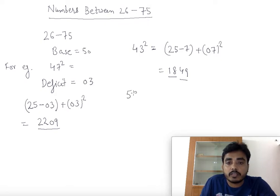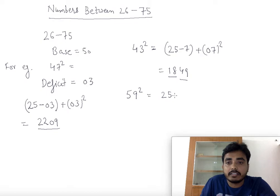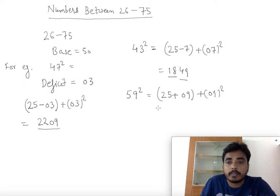Now let's take an example of a number greater than 50. We need to find the square of 59. The number is 9 greater than 50. In this case we add 9 to 25, giving 34, plus 9 squared which is 81. So the answer is 3481.